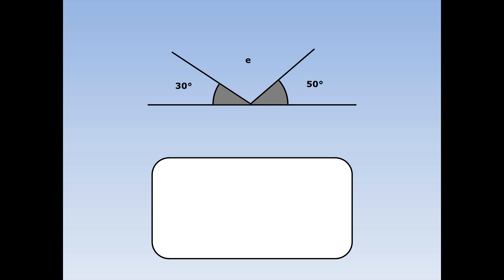On this straight line, 30, E and 50 add up to 180 degrees. To work out E, firstly I add up 30 and 50. 30 plus 50 equals 80. Then I do 180 take away 80 equals 100. E equals 100 degrees.